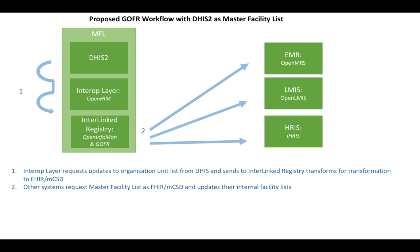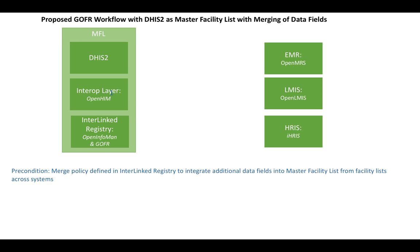A second model is to look at DHIS2 as the master facility list. However, we look at the potential other systems as providing additional data fields on health facility data that need to be merged into this master facility list. This could be domain-specific — for example, a supply chain system may know about all the depots and be the authority for that information. It could also be related to the facility type or service level, which might be encoded in the medical record system, or it could be an external system collecting additional data about health facilities.